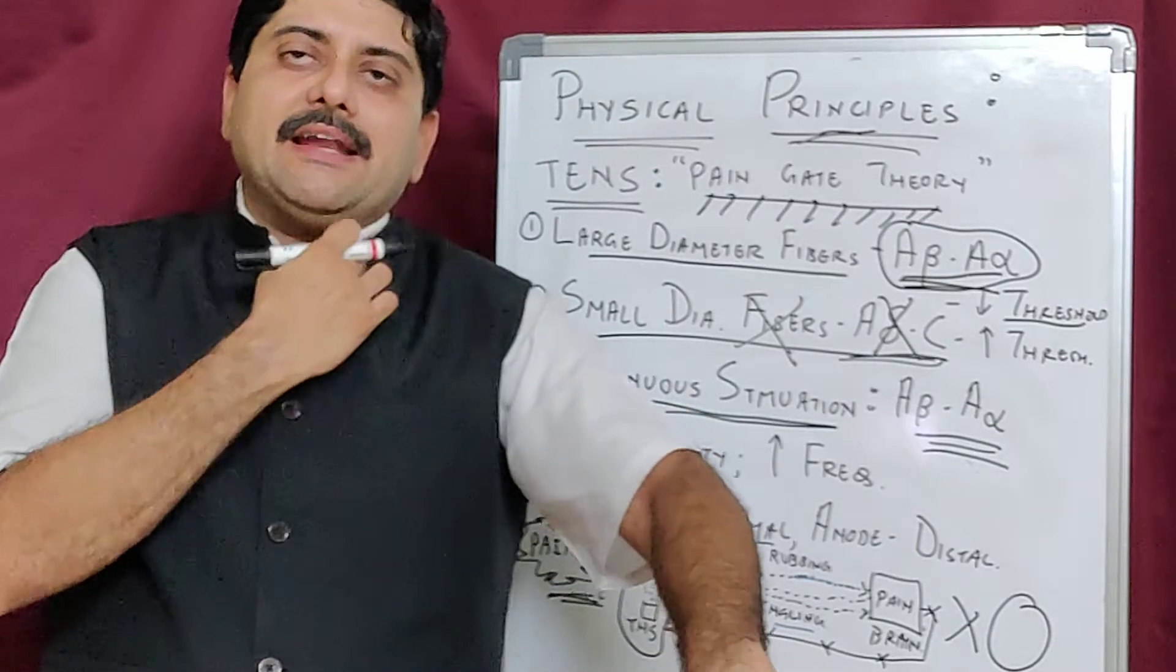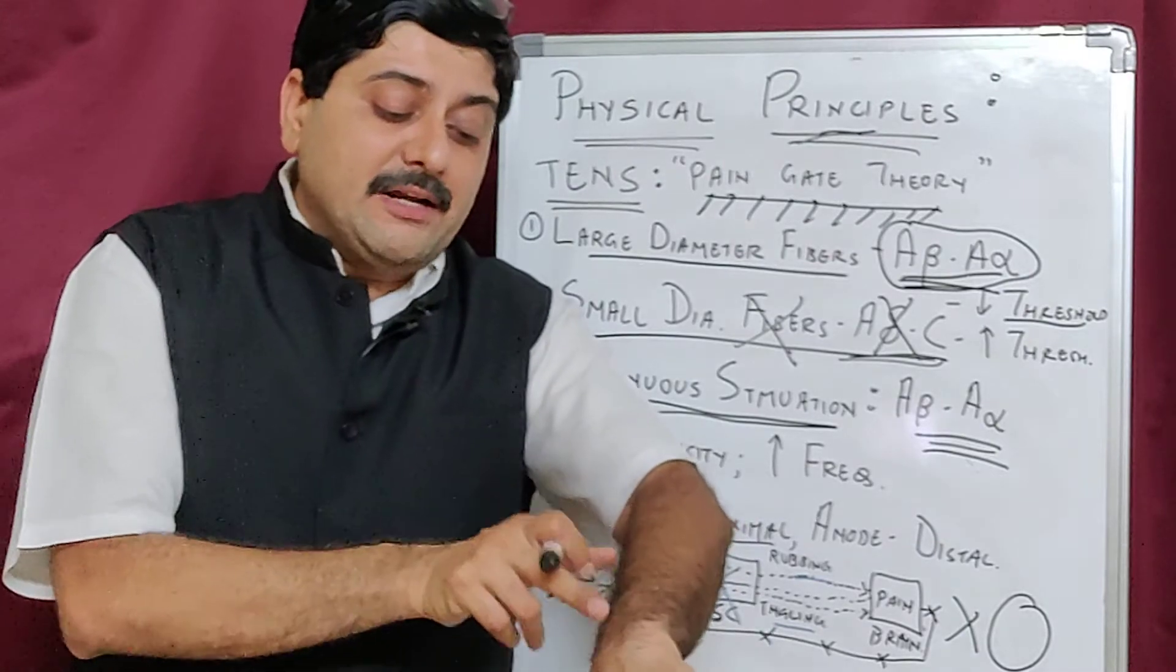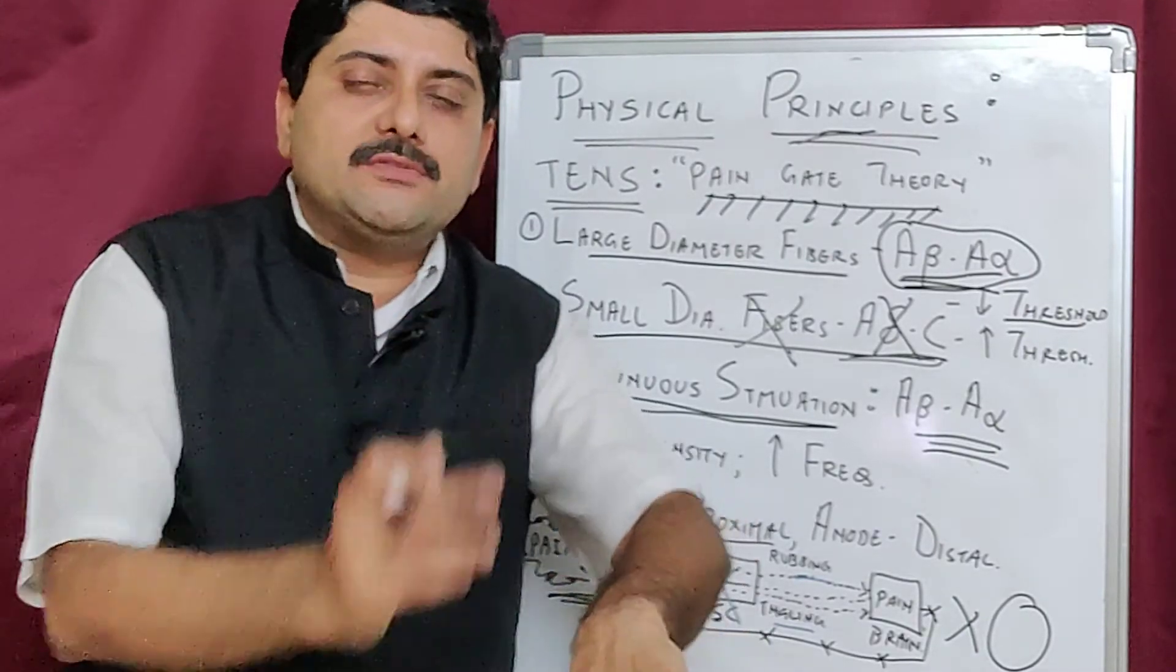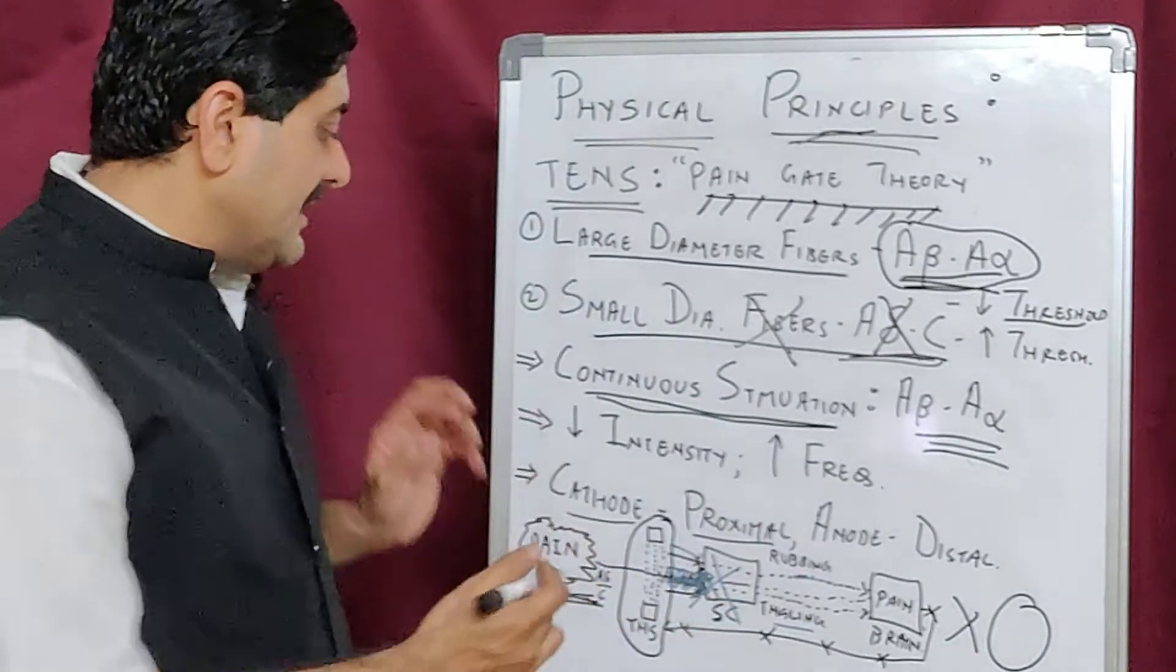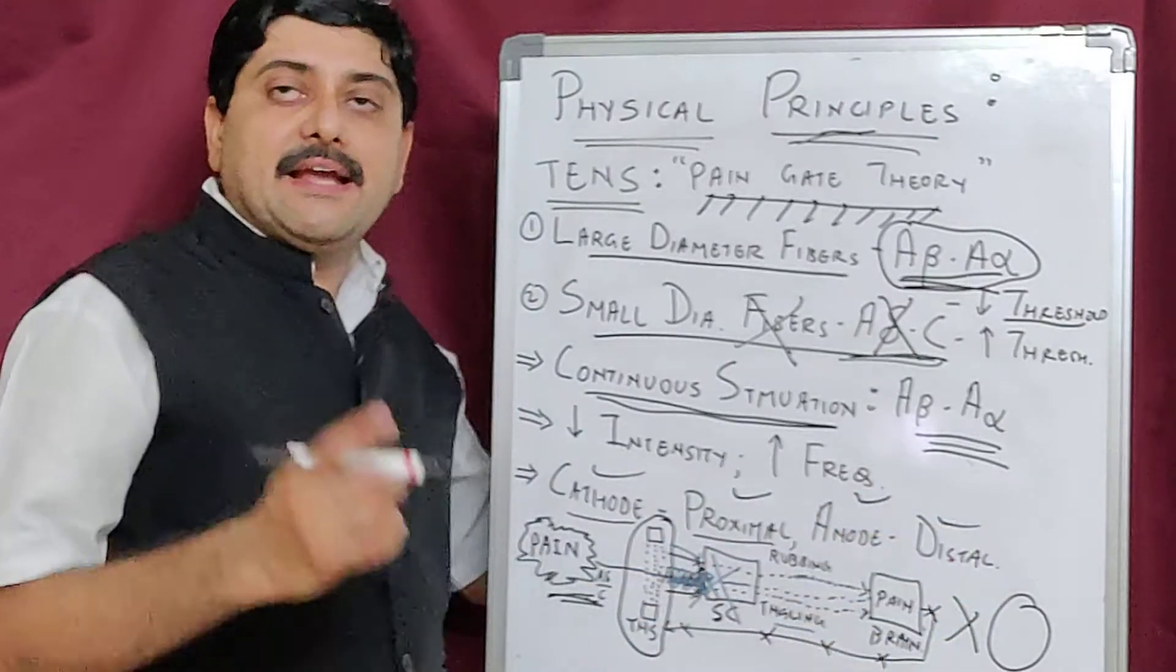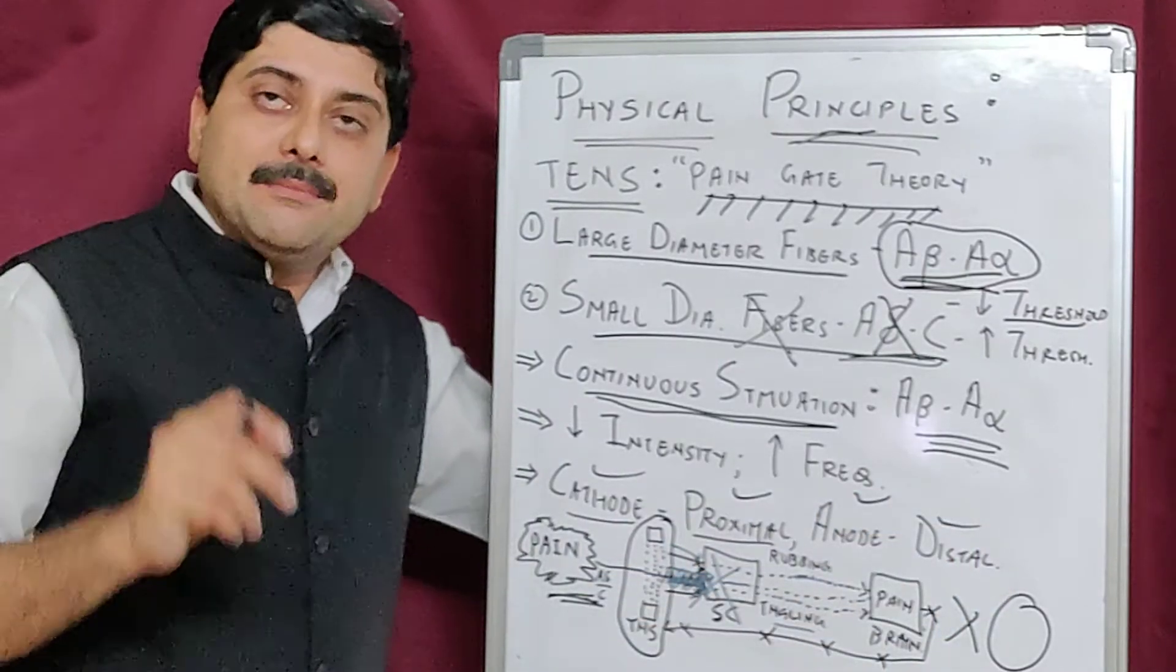If you are using a single electrode for stimulation for any reason, you have to use cathode. The electrode placement should be done on the normal area above the pain sensation point, on the normal area.